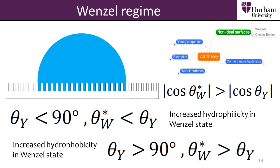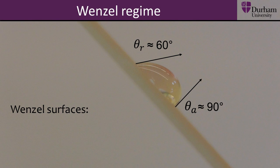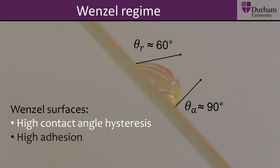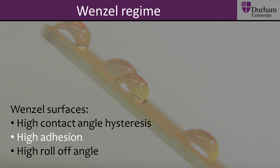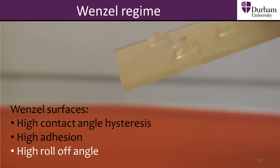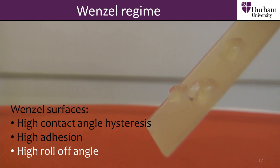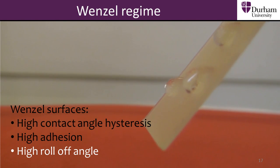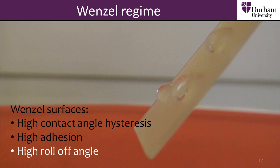By increasing the roughness of the surface — going from the ideal to the non-ideal Wenzel case — hydrophilic surfaces become more hydrophilic and hydrophobic surfaces become more hydrophobic. Droplets in a Wenzel state demonstrate high contact angle hysteresis. This is because the droplet is in contact with the surface at all points, which leads to high adhesion as there are lots of interactions between the droplet and the surface. Wenzel surfaces also have a high roll-off angle, which is the angle a flat surface needs to be tilted before a water droplet sitting on the surface will roll off spontaneously. Wenzel surfaces often display microscale roughness, but not enough roughness for pockets of air to become trapped between the surface and the droplet.